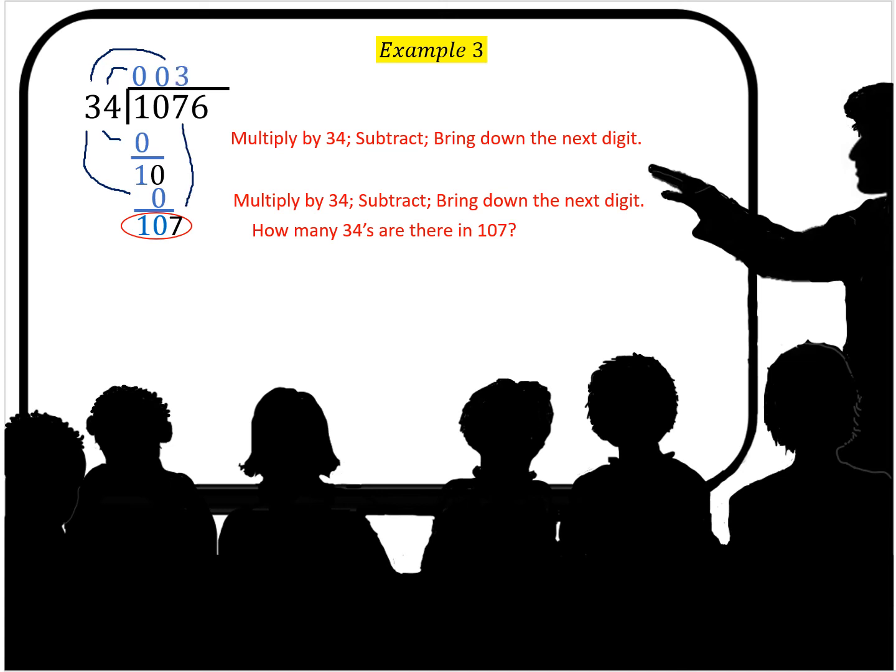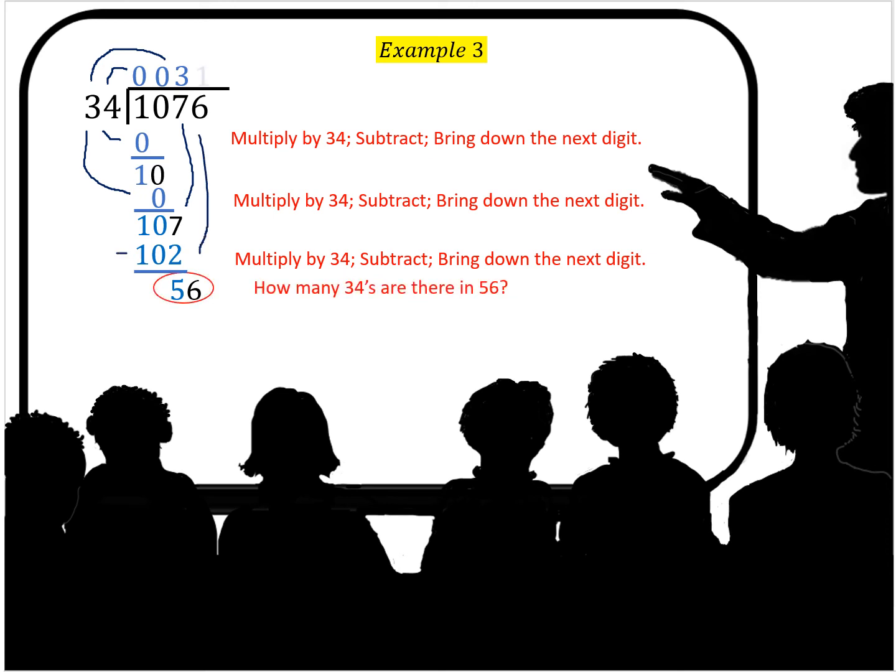How many 34s go into 107? Well there's 3. 3 times 34 is 102. You subtract, you get 5. You bring down the last digit, 6.